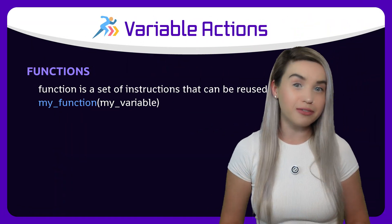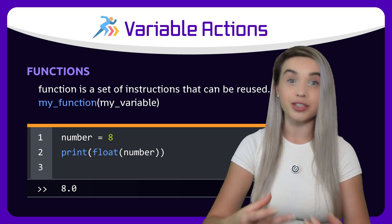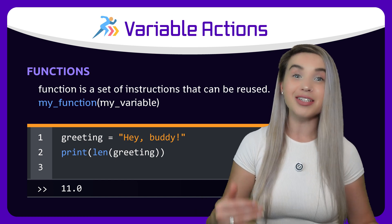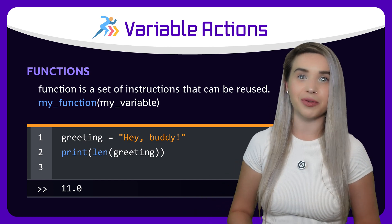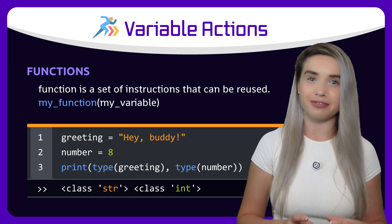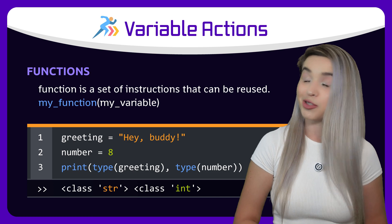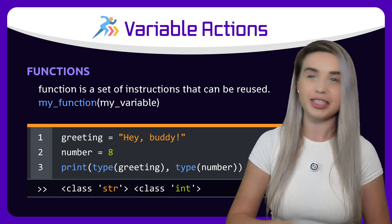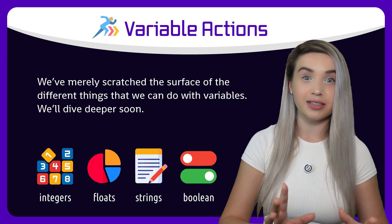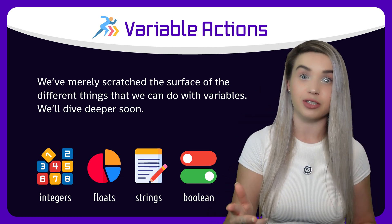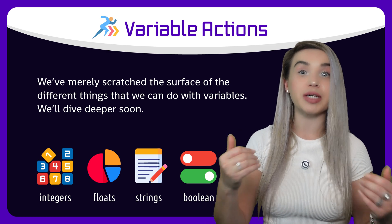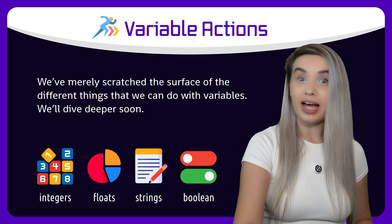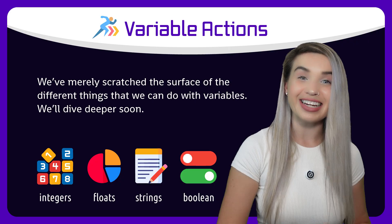Another type of action is what we call functions. We can convert an integer into a float using the float function, or find the length of a string using the len function. And most of all, we can find the data type of any variable using the type function. Knowing the type of data we're dealing with is very important, because it changes everything. We've only scratched the surface when it comes to operators, methods, and functions — in future videos, we will dive into them in great detail. But for now, let's practice everything we've learned today in code.